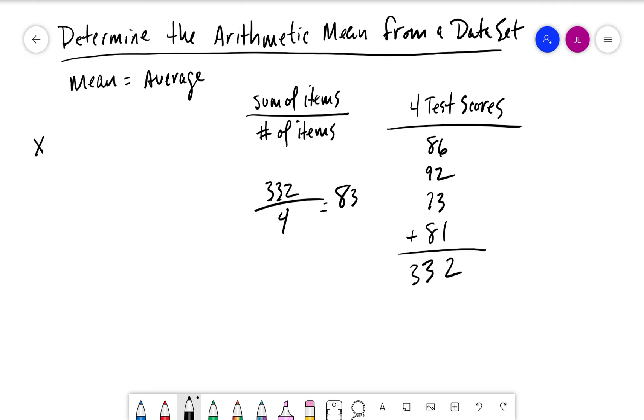Now a couple of different things we use when we do the mean. We have what we call x̄, which is an x with a bar over top of it. This is the mean of sample data. We have Σ, which is sigma, and this means to sum or sum up.